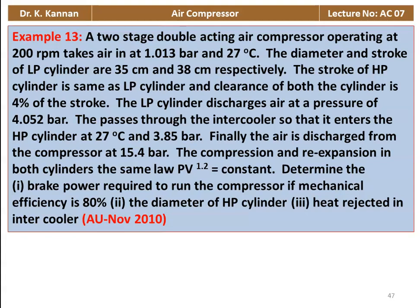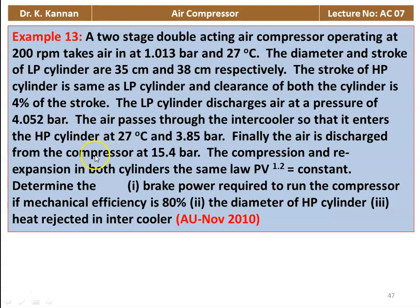Example number 13 from November 2010 question paper. A two-stage double-acting air compressor operating at 200 RPM takes in air at 1.013 bar and 27°C. The diameter and stroke of the LP cylinder are 35 cm and 38 cm respectively. The stroke of the HP cylinder is the same. Clearance of both cylinders is 4% of stroke. LP cylinder discharges at 4.052 bar. Air enters the HP cylinder at 27°C and 3.85 bar after the intercooler, and is finally discharged at 15.4 bar. Compression follows PV^1.2 = constant. Determine brake power if mechanical efficiency is 80%, the HP cylinder diameter, and heat rejected to the intercooler.